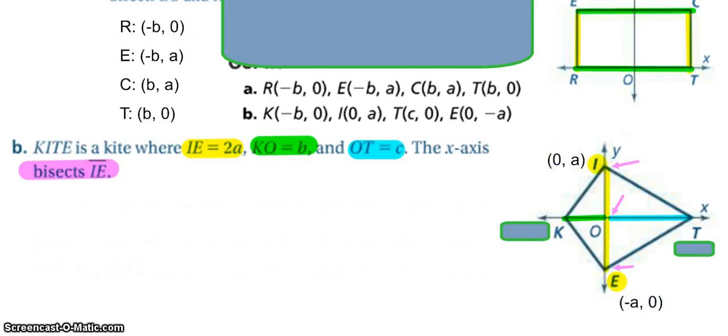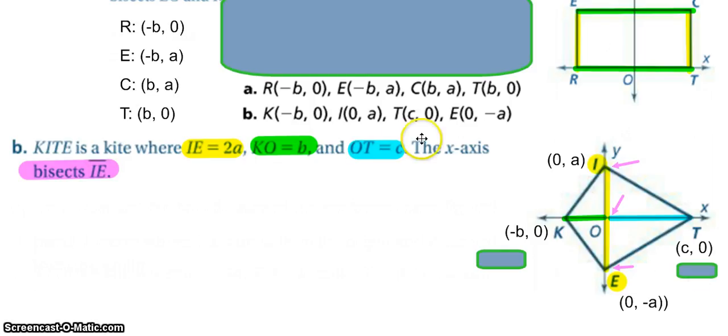And they are on the Y axis so they have, this is backwards, because I'm told that the distance between K and O is B, I know that this is at negative B zero. And then T, I'm told OT is C, so similarly I'm at C zero. And here are your answers if you could not tell for both A and B.